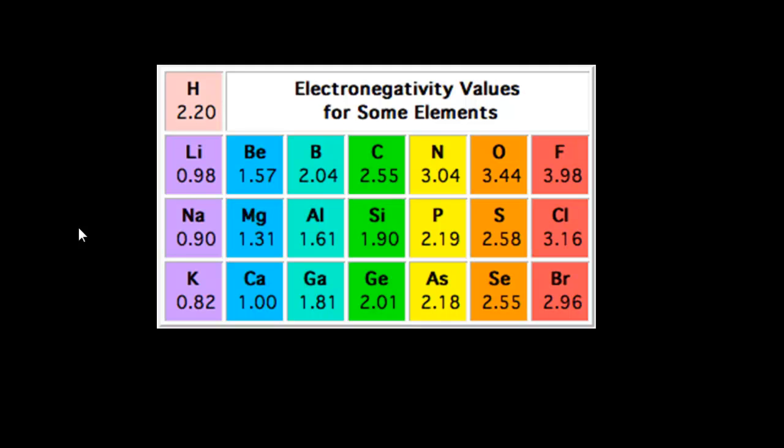You can see there, we've just picked out some of the more common elements. So we have fluorine there at 3.98 on this table. And the lowest electronegativity you can see there, the value is potassium on that particular table. You can see there are certain trends as you go from left to right, and there are also certain trends as you go from top to bottom.